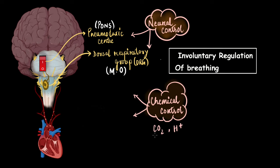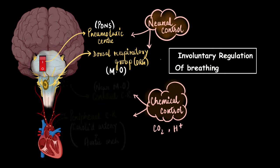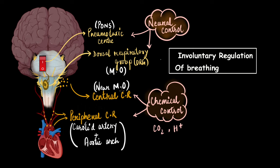For chemical control: it comes into play when there is an increased level of carbon dioxide or hydrogen ions in the blood or cerebrospinal fluid — basically when blood pH drops. The group of receptors near the medulla oblongata that senses increased acidity in the cerebrospinal fluid is called the central chemoreceptor. The other group, present in the carotid artery and aortic arch, is called the peripheral chemoreceptors. Both report to the pneumotaxic center in the pons. This was all about the involuntary regulation of breathing.